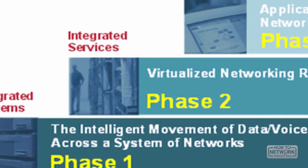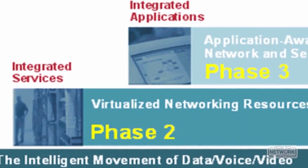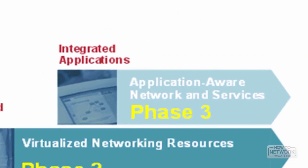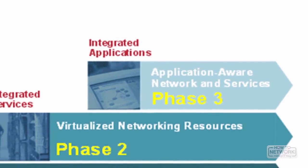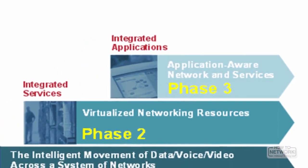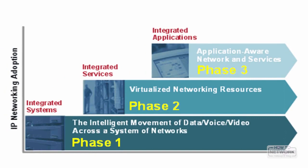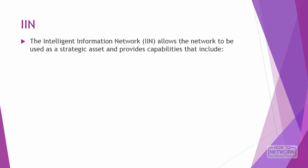IIN's single integrated system provides intelligence across multiple layers and aligns the network infrastructure with the rest of the IT infrastructure, integrating the network with applications, software, servers, and services. The network becomes an active participant in the total delivery of applications and services. Cisco sees this as an evolving ecosystem that responds to constantly changing business requirements. The Intelligent Information Network is a Cisco ideal where network and application services are integrated, allowing for cost savings and improved user productivity.